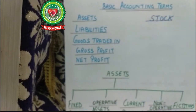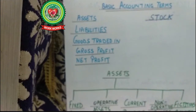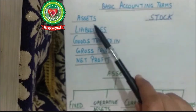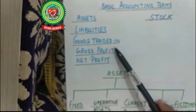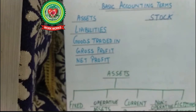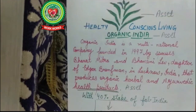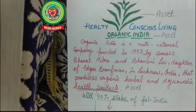Today we are going to cover the following basic accounting terms: first of all assets, then liabilities, goods, traded-in gross profit, net profit, and stock. First of all, we will learn about the term assets.